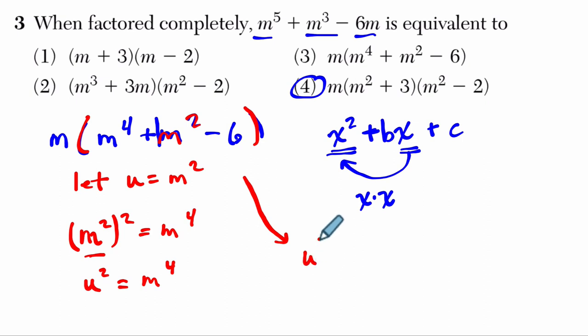We have u squared plus 1 times m squared. Well, m squared is u, so that's just u minus 6.